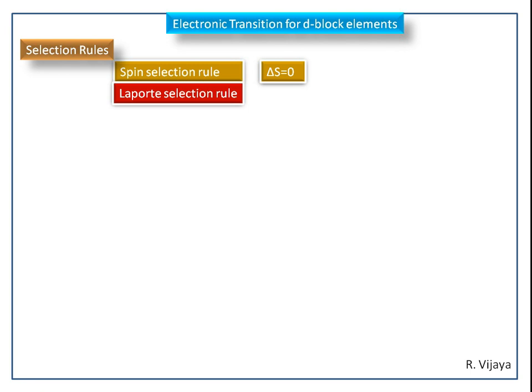Next, we see the Laporte selection rule. For a centrosymmetric molecule, transitions within a set of orbitals are forbidden transitions. That is, transitions P to P, D to D, F to F are forbidden transitions. Otherwise, P to D, D to P, F to D, S to P, etc. — these types of transitions are allowed transitions.